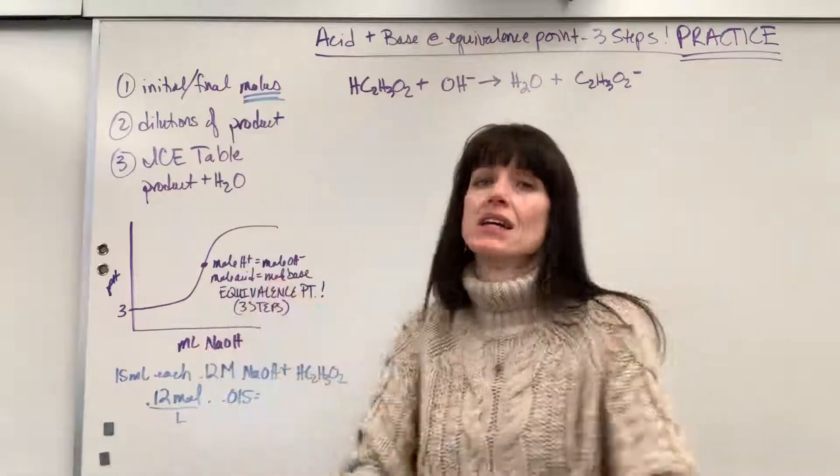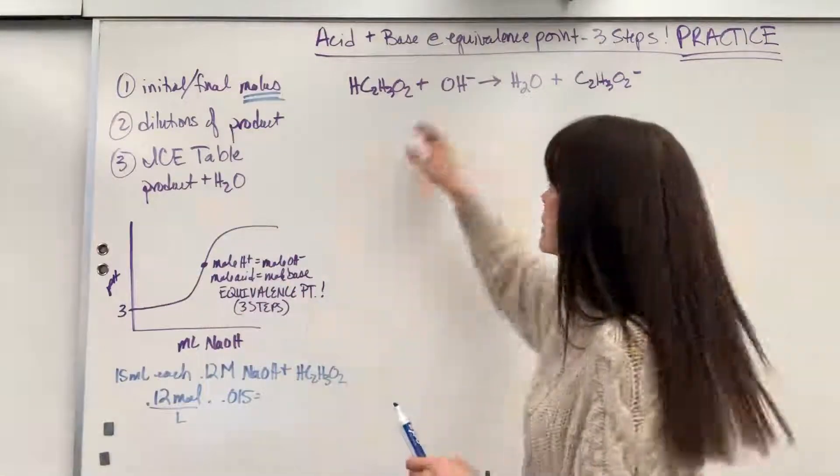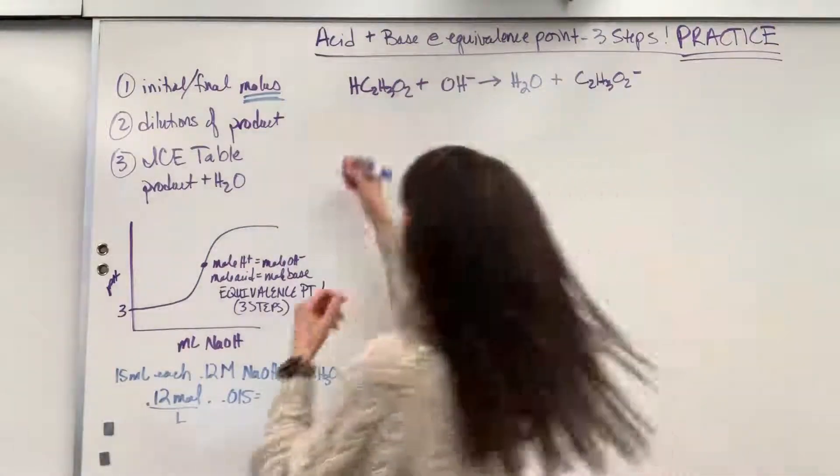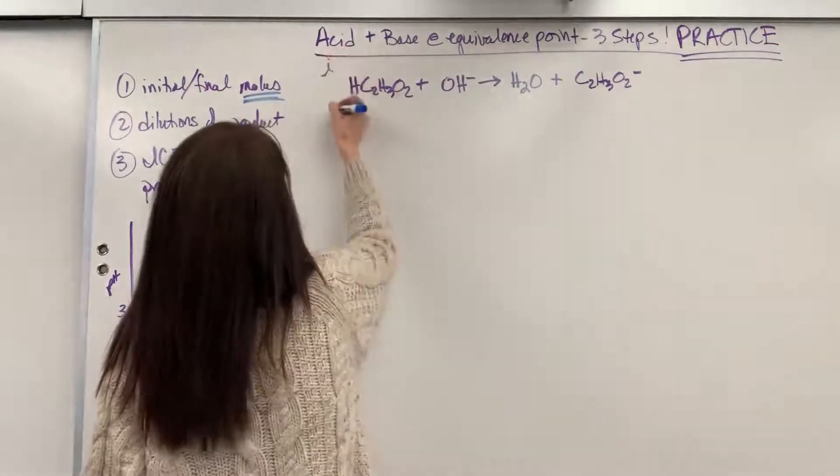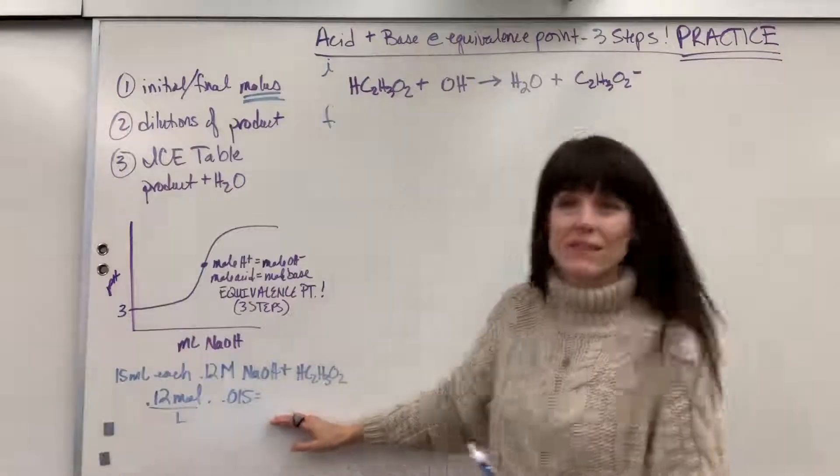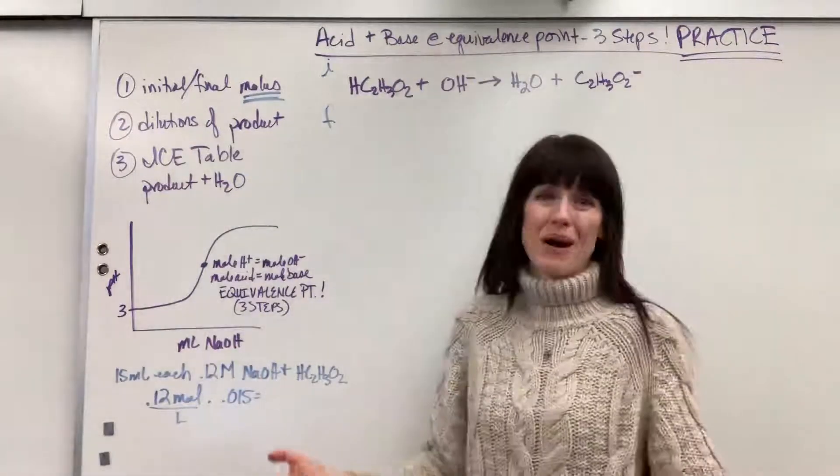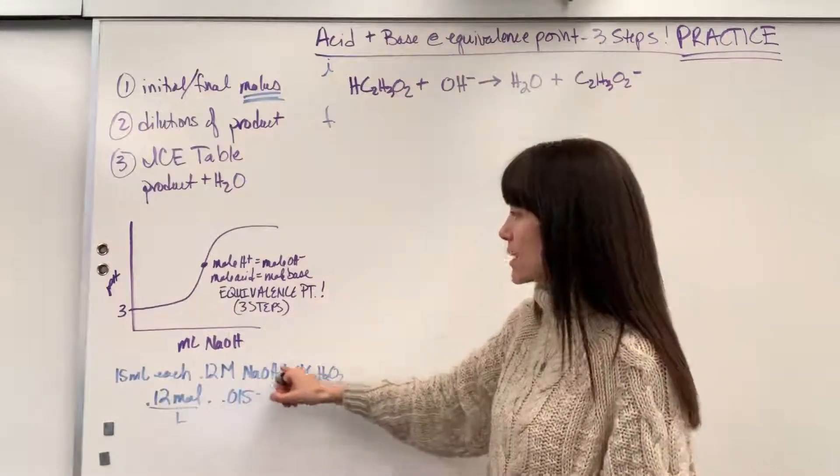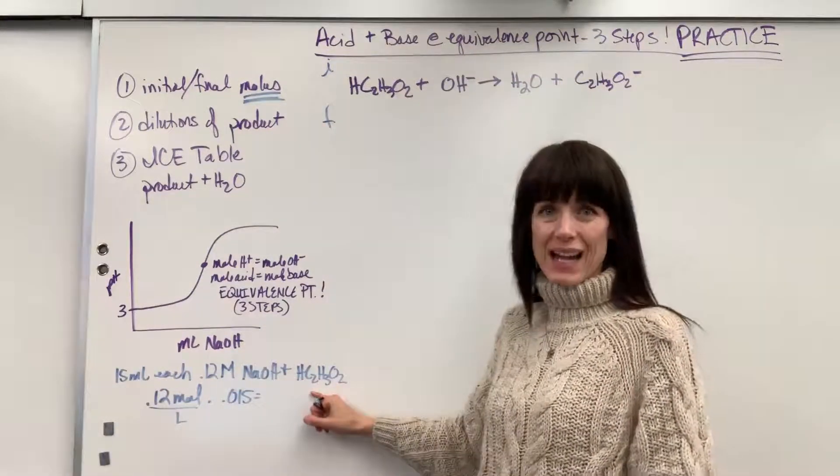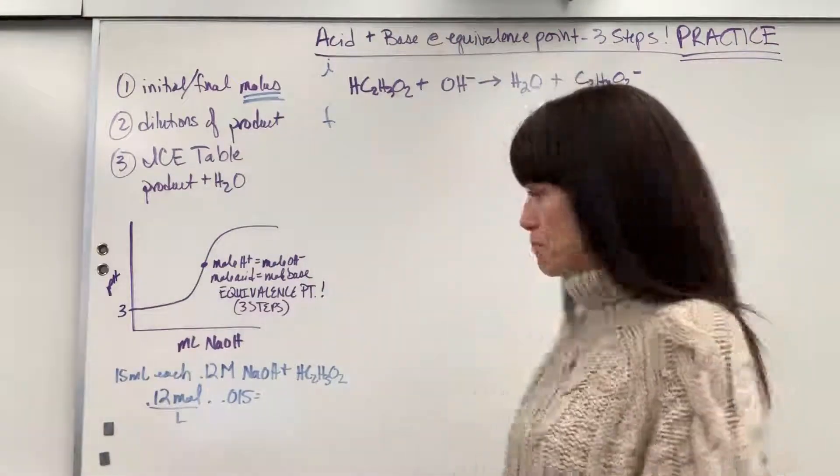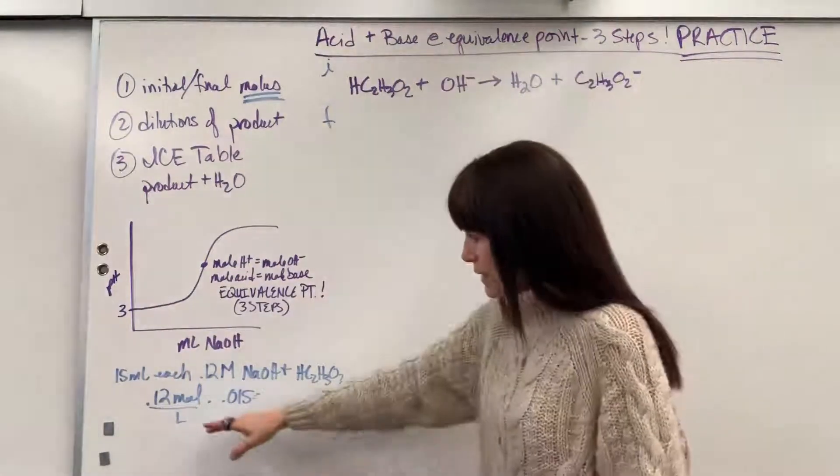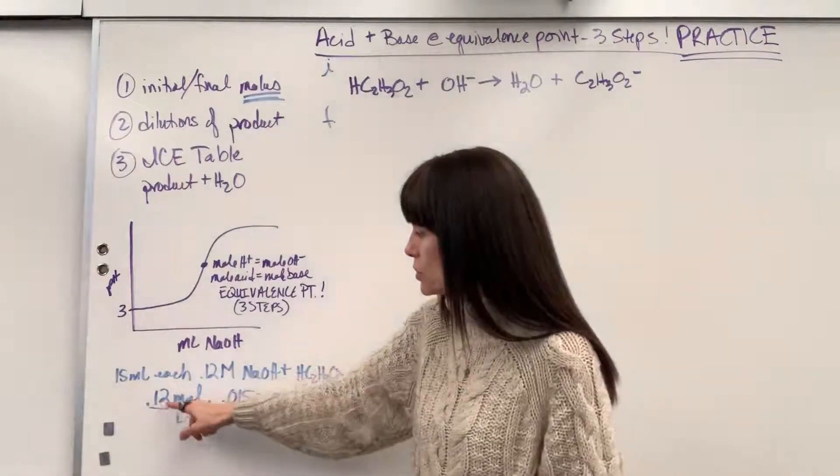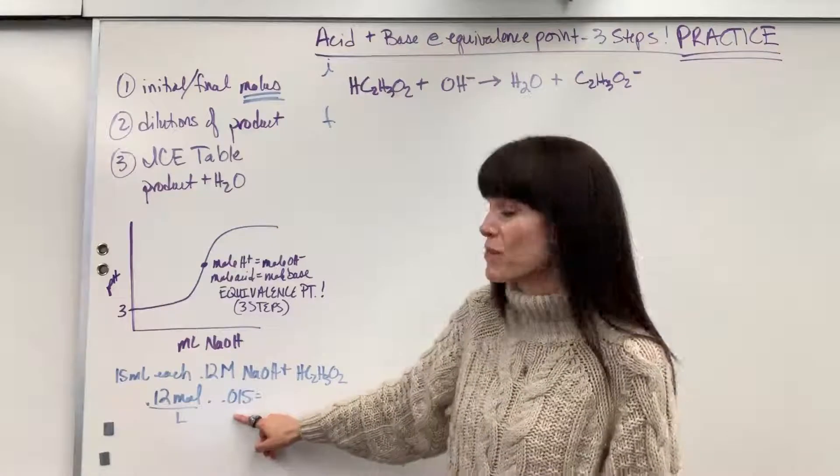It's going to be an acid and a base that react. So here we've got our strong base that's going to rip through that weak acid. So let's go ahead and do initial final moles. Now, I've given some information. This is really all the problem sets. We are given 15 mils each of a 0.12 molar sodium hydroxide and a 0.12 molar acetic acid. And it says, what's the final pH of this solution?